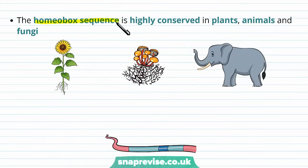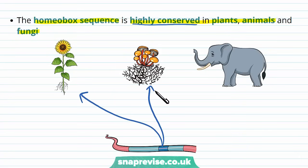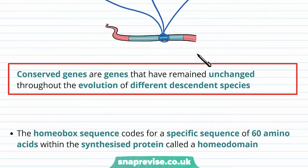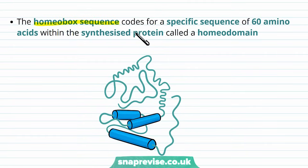The homeobox sequence, which is only 180 base pairs, is highly conserved in plants, animals, and fungi. By saying highly conserved, this means it's kept through evolution and is basically the same for many different organisms — the same order of base pairs across plants, fungi, and animals. Conserved genes are genes that have remained unchanged throughout the evolution of different descendant species. The homeobox sequence codes for a specific sequence of 60 amino acids, which makes sense because 180 nucleotides divided by three nucleotides per codon gives 60 amino acids.